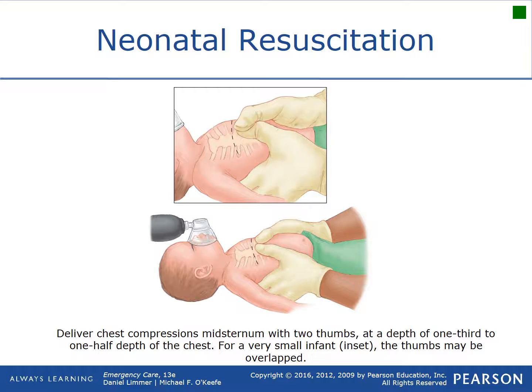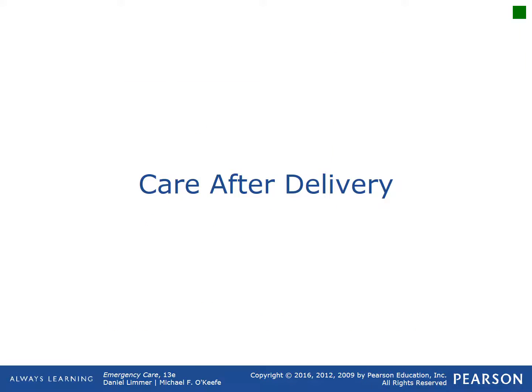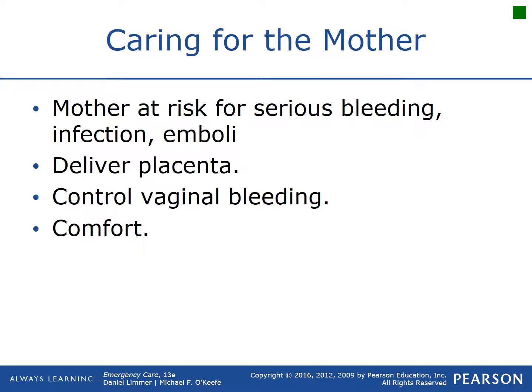After successfully delivering the baby, you now have two patients. The mother may be at risk for serious bleeding, infection, and possibly emboli or pulmonary embolism due to the clotting process — worst-case scenario includes developing strokes. Continue monitoring, deliver the placenta, and control vaginal bleeding. Rub on the fundus — the area right above the pubic bone — to help stimulate clotting, and provide comfort and support to the mother and her new child.